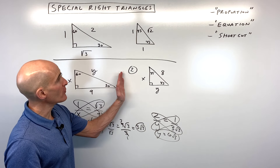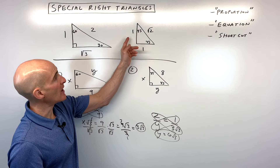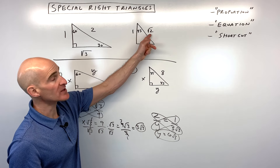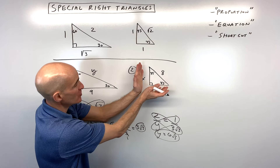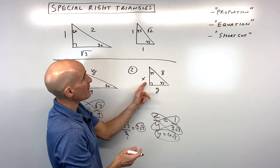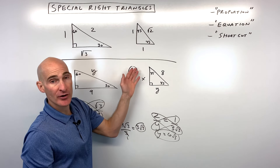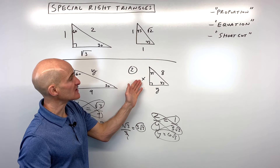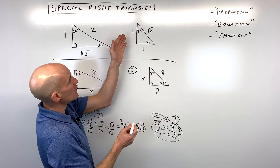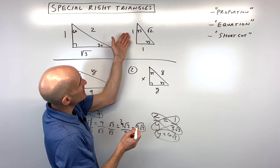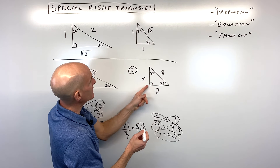For the 45-45-90, you want to memorize this triangle: 1, 1, and square root of 2. Comparing it to another 45-45-90 triangle, the corresponding sides are going to be in the same ratio, so we can form a proportion — the leg is to the leg, and so on.